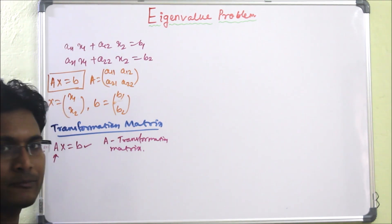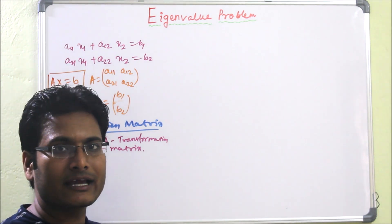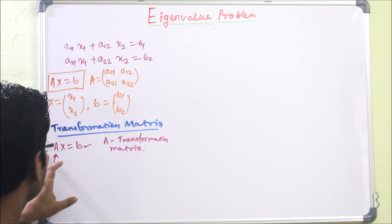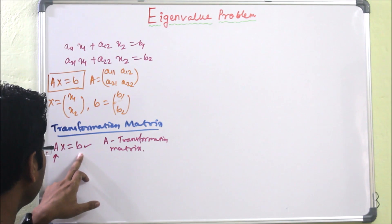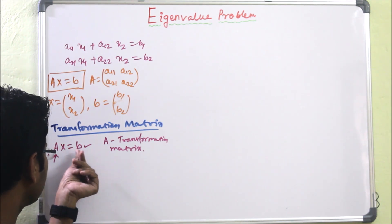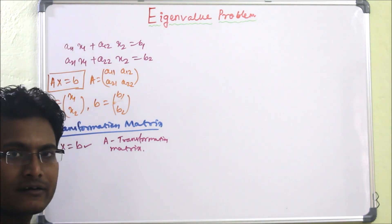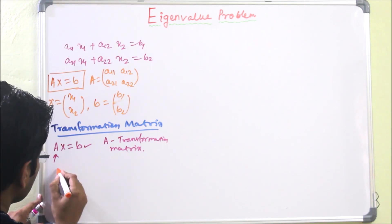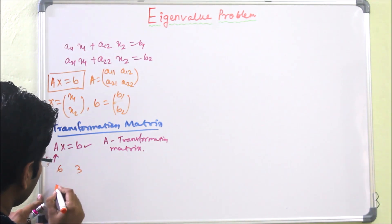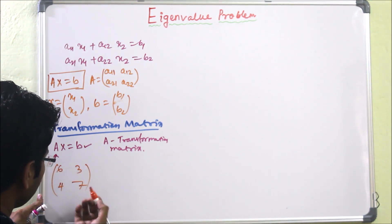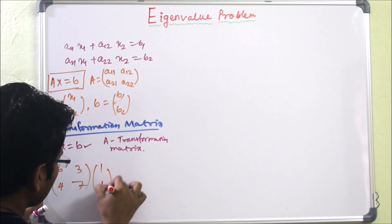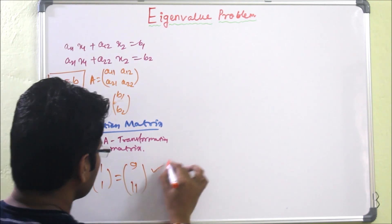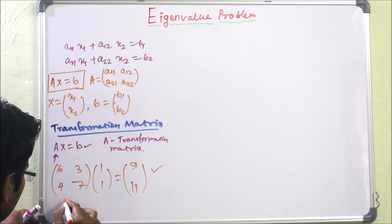Now we will slowly move toward the Eigenvalue concept. We can raise the question: if we multiply A by x to get b, is there any relation between x and b? To explore this, consider the example matrix [6, 3; 4, 7]. If we multiply it by [1, 1], we get [9, 11].